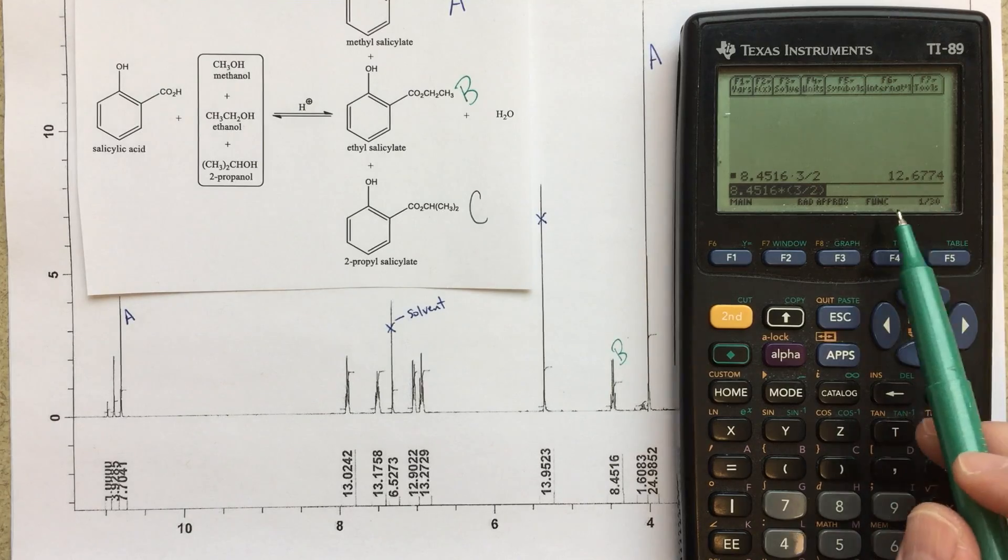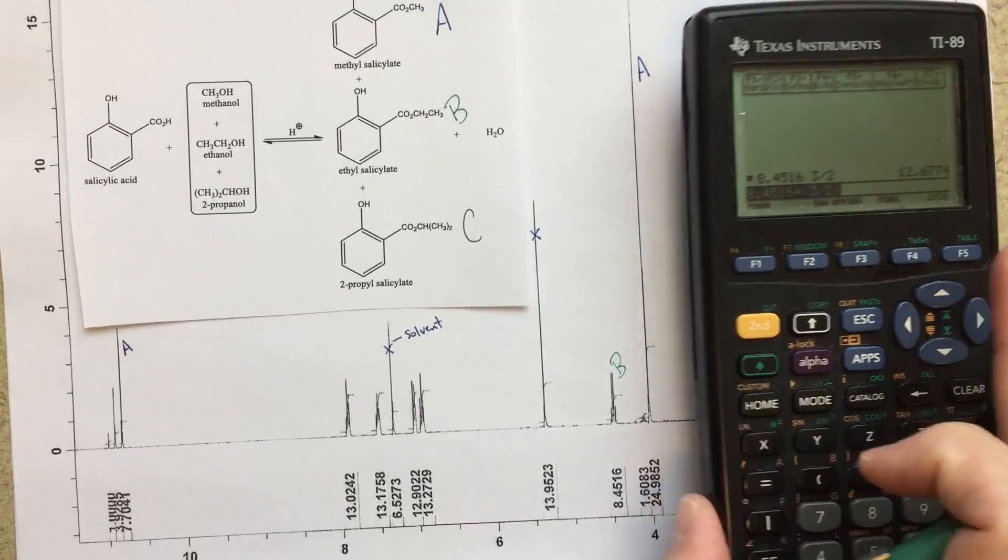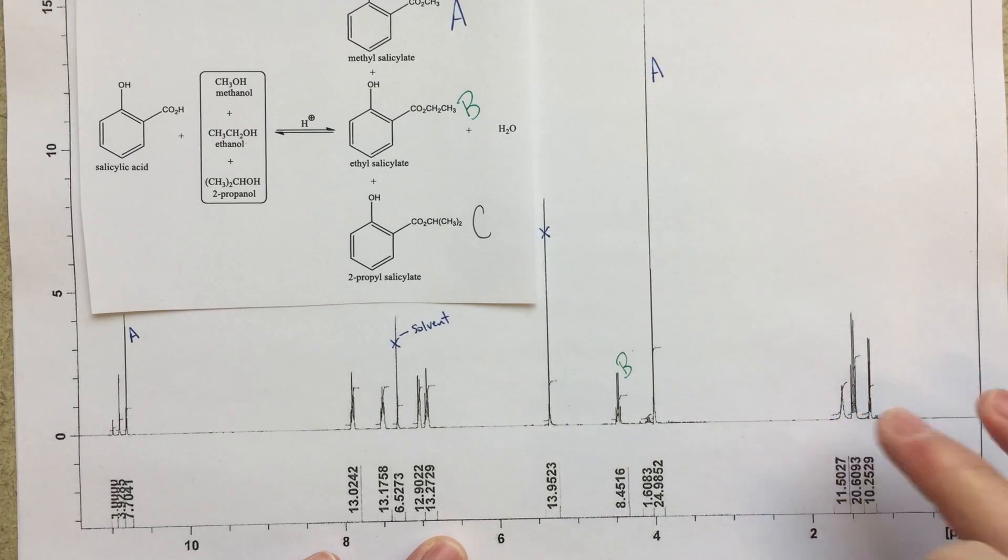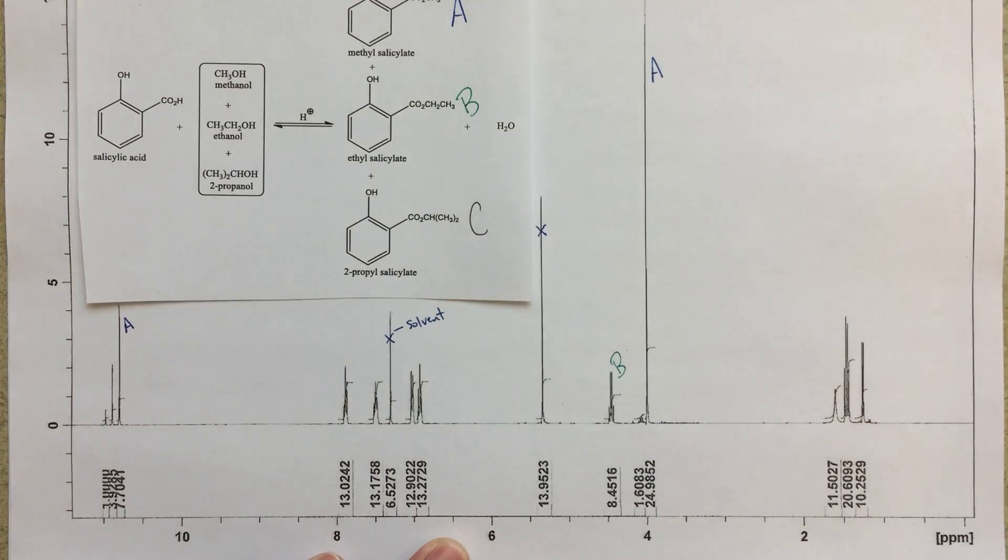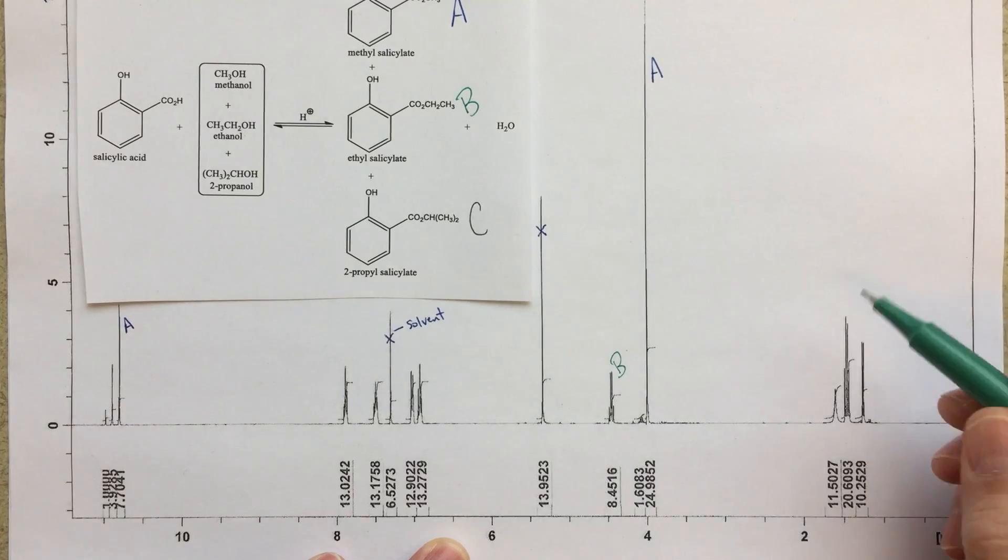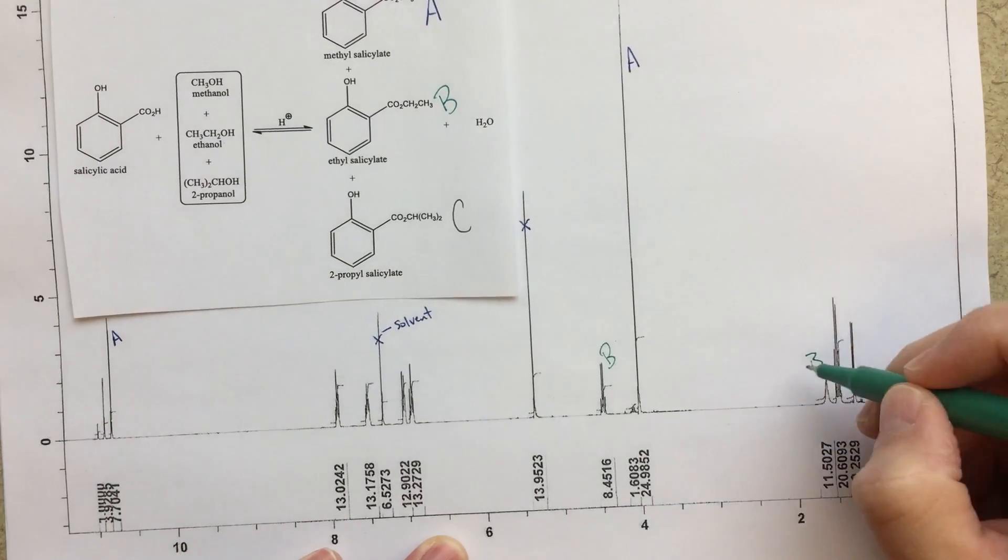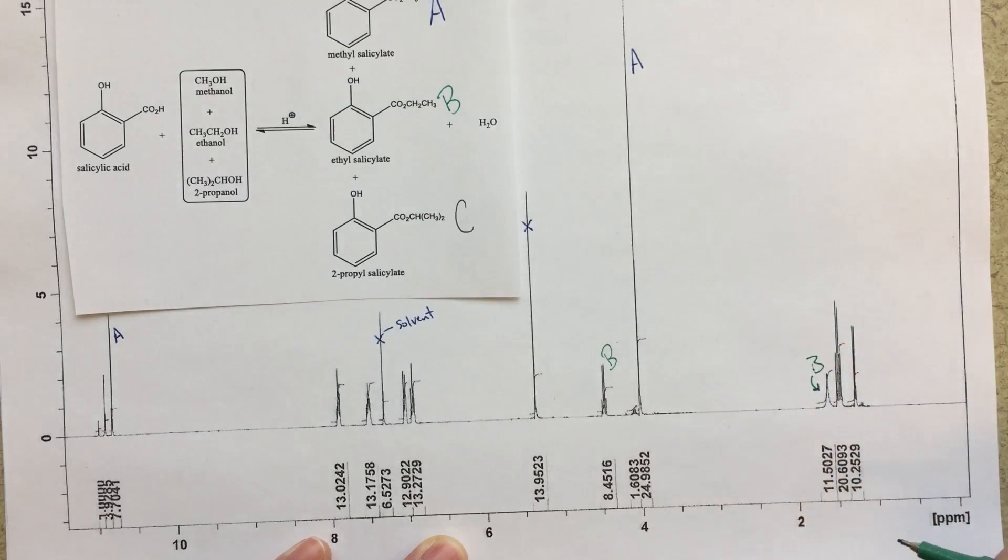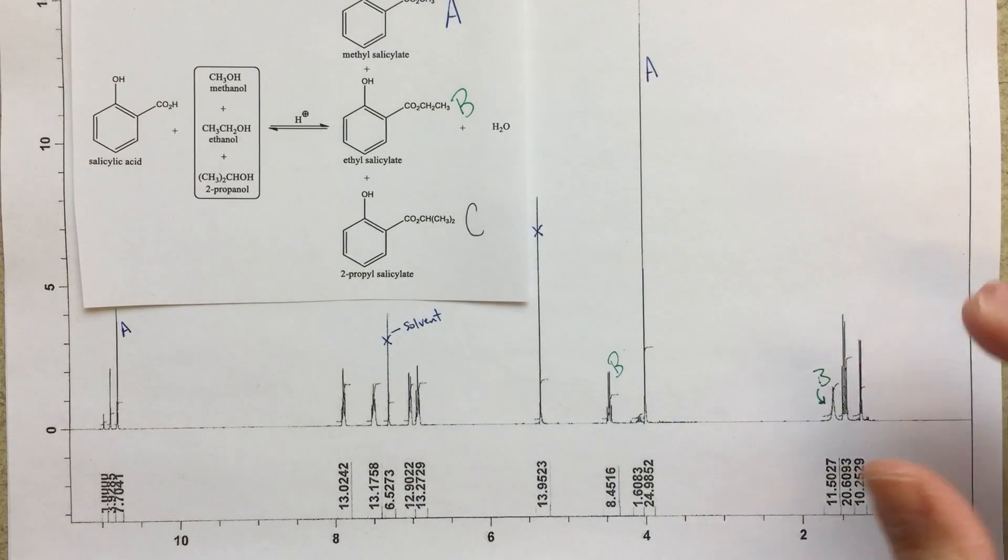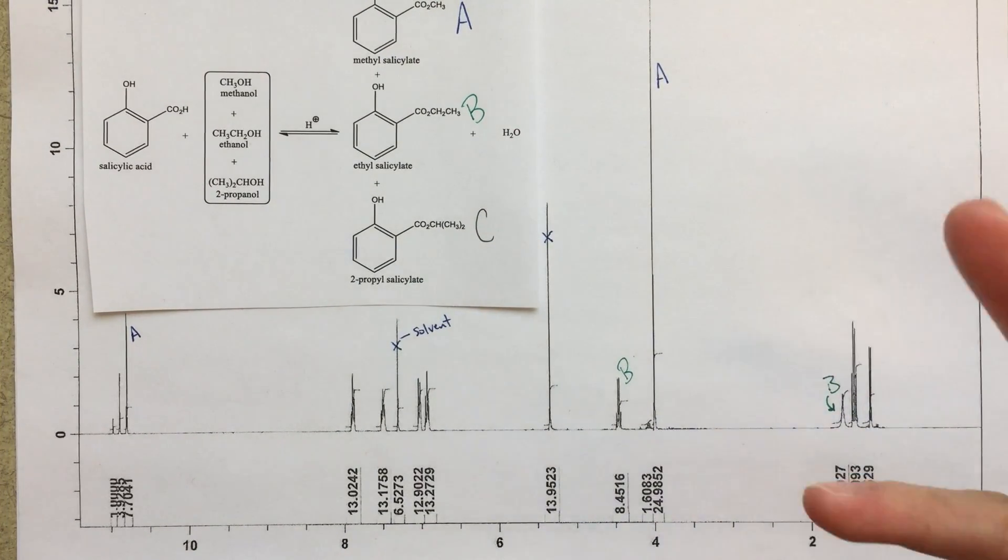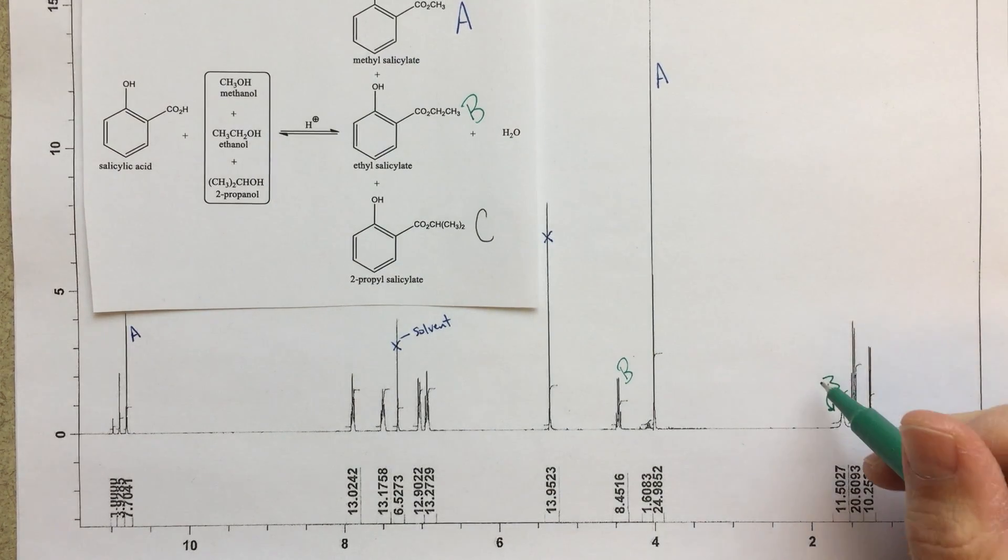Because whatever this value is, that should really be what the integration for our methyl group is. Now, the number we get, 12.6774, is definitely closer to this 11.5027 than 20.6093. These integrations are not going to be exact. But I think it's safe to say that this broad peak is probably that triplet and just the coupling did not get drawn out as nicely as we'd like to see. But I think we can safely say that this B peak, that's going to be our ethyl peak.